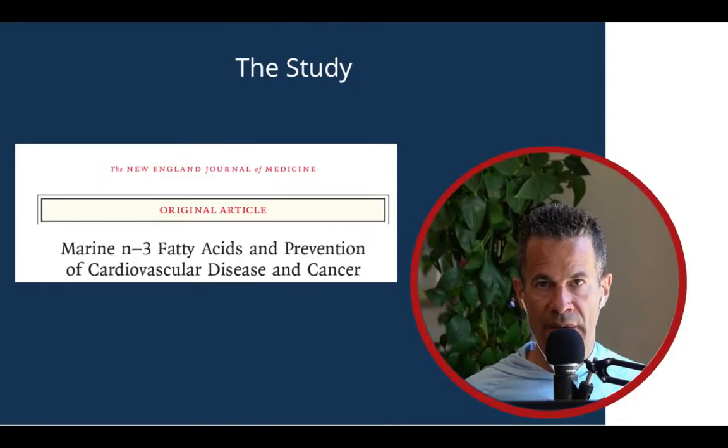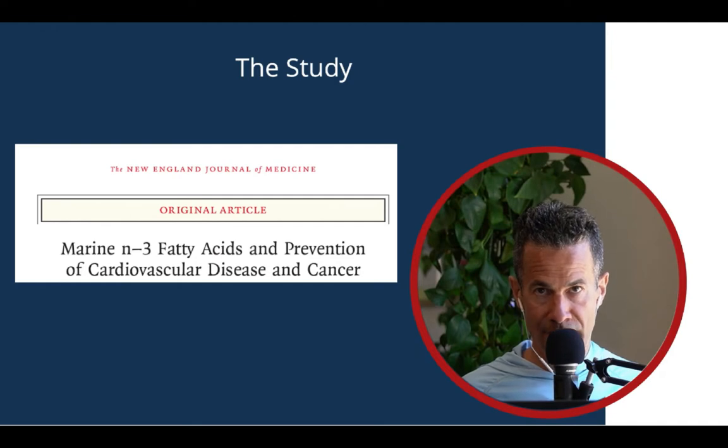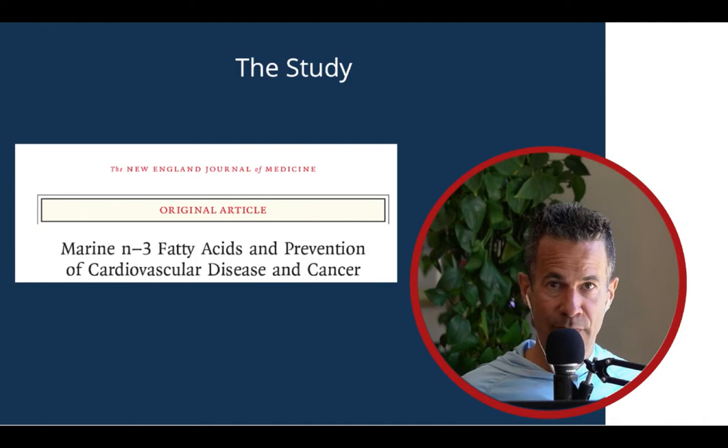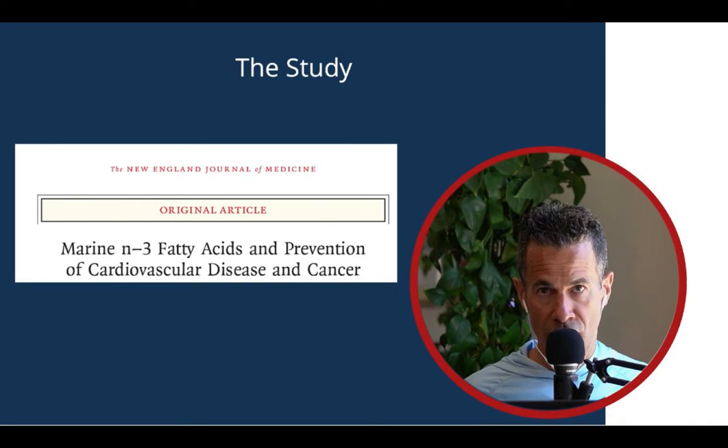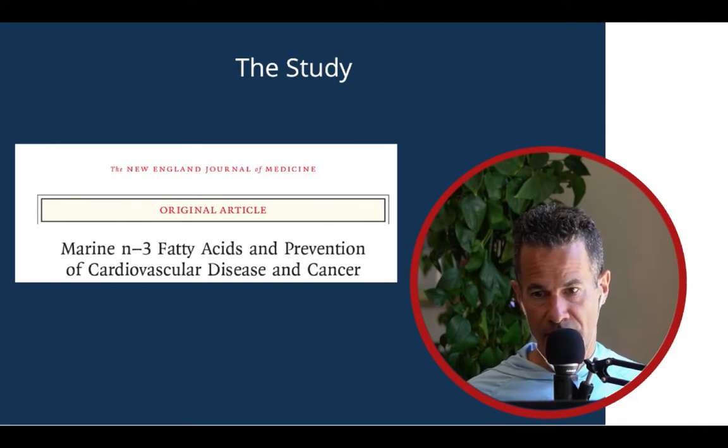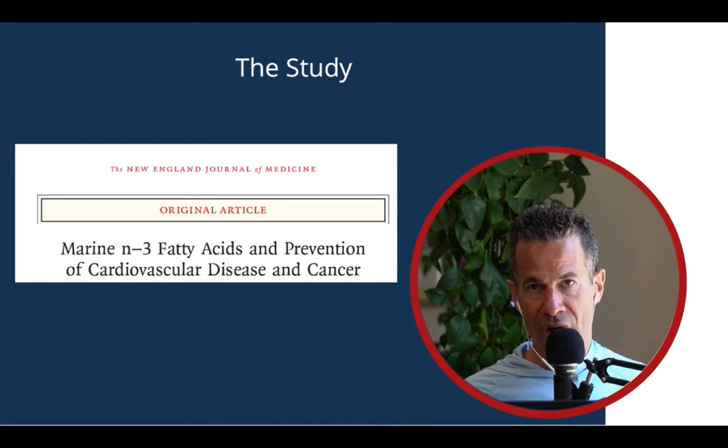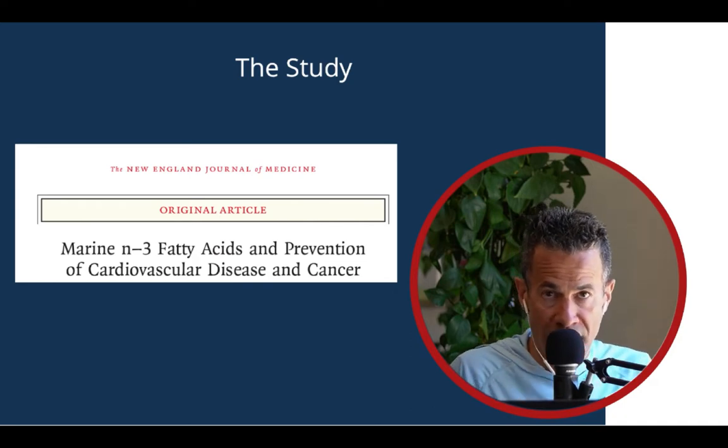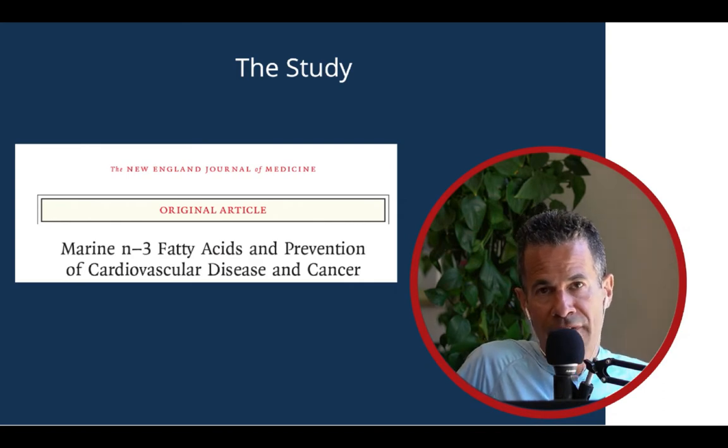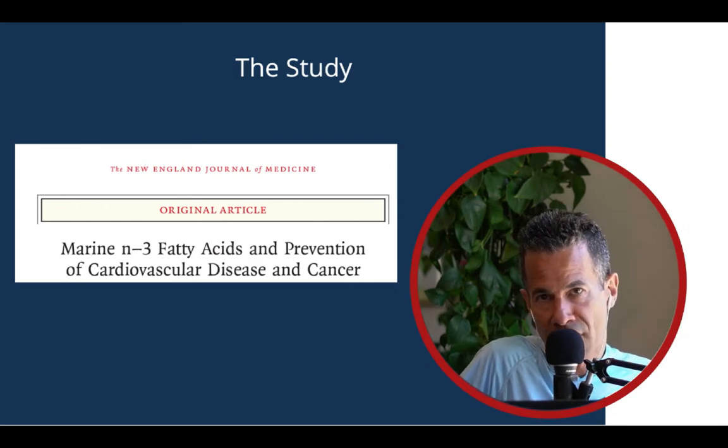The study we're examining was published in the New England Journal of Medicine in January 2019. The New England Journal of Medicine has an impact factor of 91, making it one of the most respected journals in the world and helping us have confidence in the study's findings. This was a primary prevention study of whether or not omega-3s affected risk of heart disease and cancer. Primary prevention means that the people didn't already have heart disease or cancer when they entered the trial.